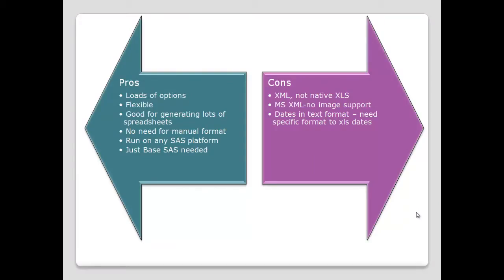What are the advantages of this approach? Loads of options — I've just shown you a couple of simple examples. Go and look up the documentation on the Excel XP tag set and you'll find loads of different options. That means it's very flexible — you can get all sorts of different Excel spreadsheets created. Another thing it's good for is generating lots of spreadsheets. Some earlier techniques where you point and click to create a specific spreadsheet — if you wanted to create a thousand spreadsheets for a thousand different branches, that means clicking through a thousand times. Whereas this is all code-generated; you could wrap a macro around the ODS tag sets and just change the macro variables to create a thousand spreadsheets very simply indeed.